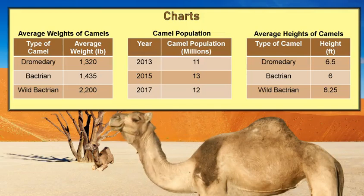I mean, what do I know? I'm just a camel. The camel has a point. If you look at these tables, you can't automatically tell just by looking at it if it's going up or down or what the trend is. You have to actually go number by number and see, is it increasing? Is it decreasing? We need a visual representation.